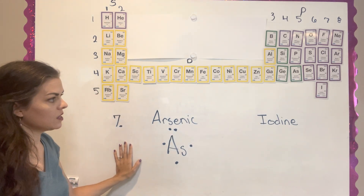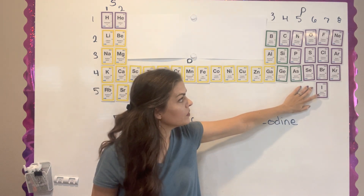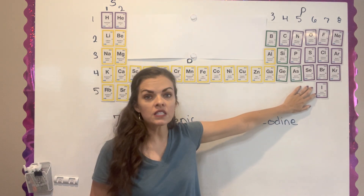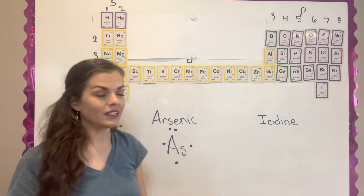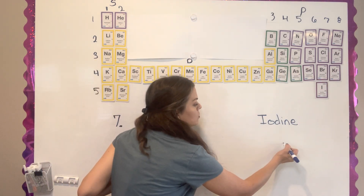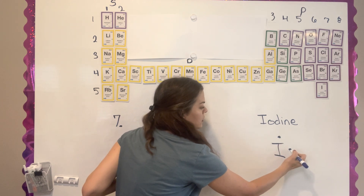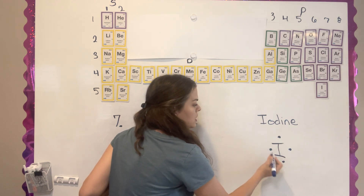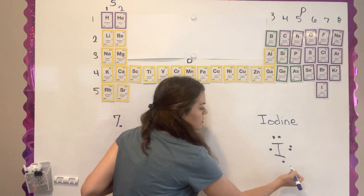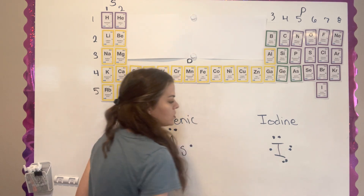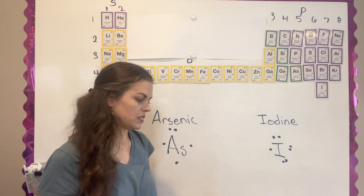The next one they give you is iodine. I added it on my periodic table and it is in group seven, so it has seven valence electrons. Its symbol is I, and you fill in the first four separately, then come back around and pair them up. Iodine has three pairs and one that is not paired up.